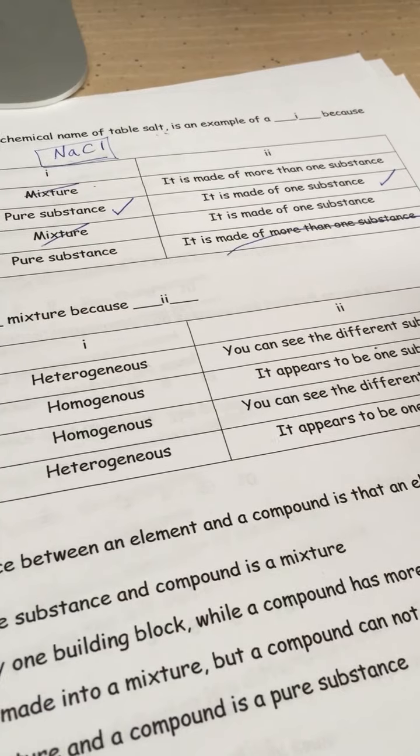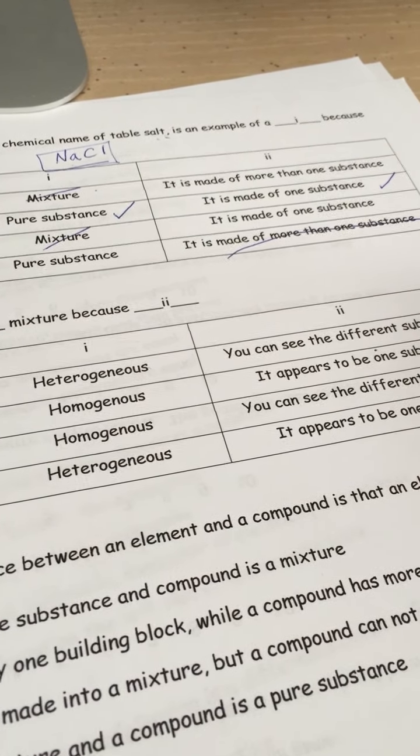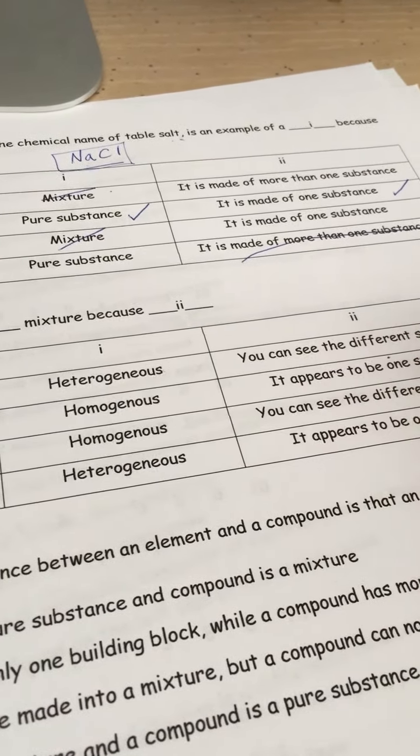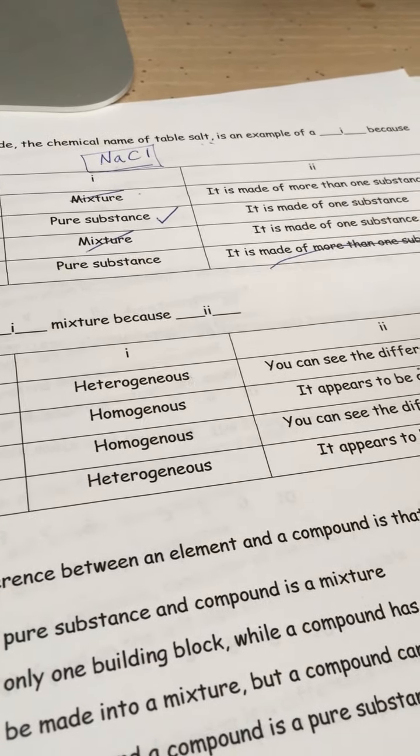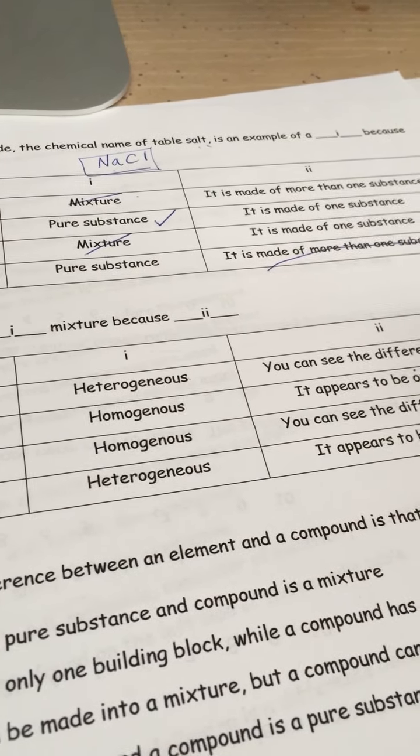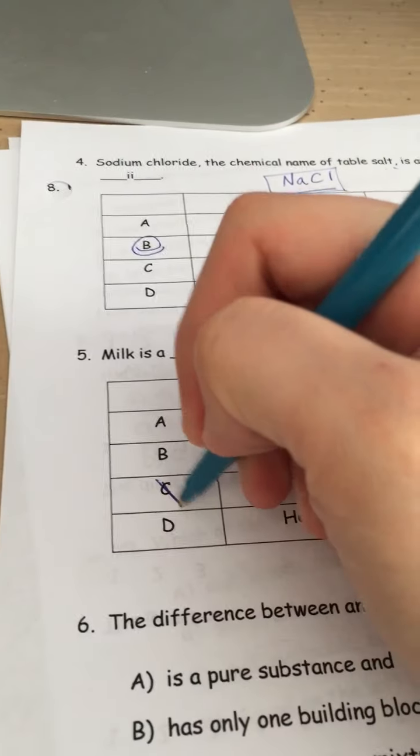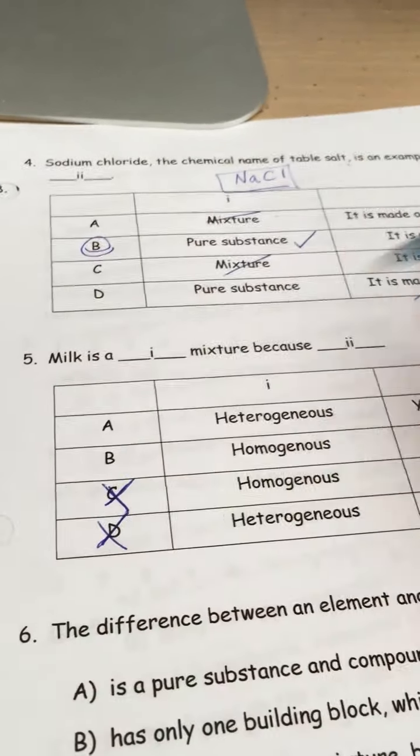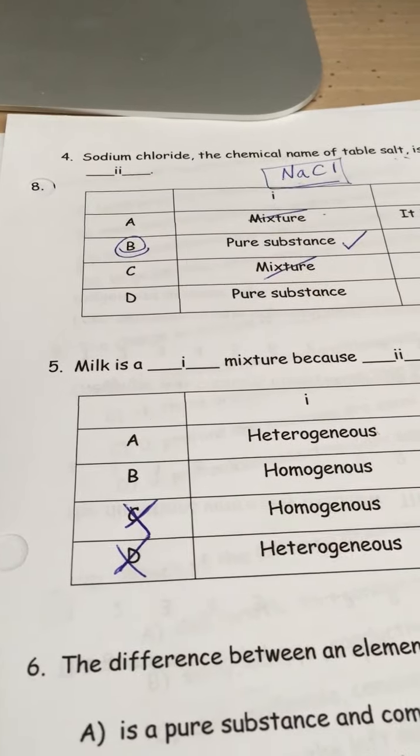Homogeneous, can you see different substances? Nope, that's totally false. Heterogeneous, however you want to pronounce it, appears to be one substance. Nope. Right off the bat, it's definitely not C, it's definitely not D, and we haven't even looked at our example yet.